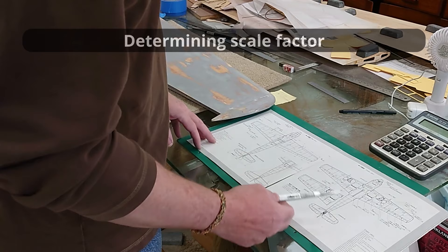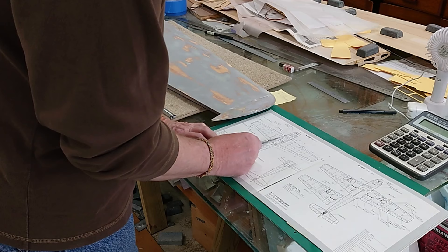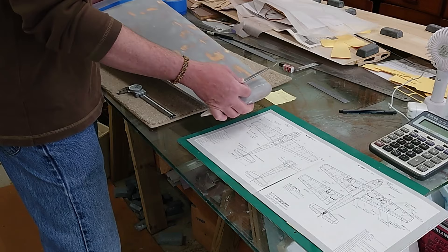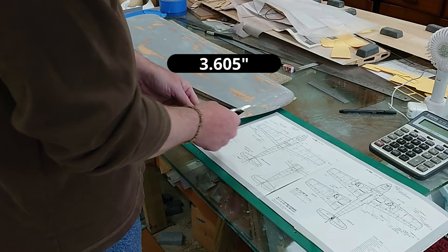This is a 1:48 scale three-view, and I measured from this join line. It's a fairing on the real airplane. I've simulated it by adding blue tape here. So I measured from there out to the end of the wing tip. I measured 3 inches and 605 thousandths of an inch.